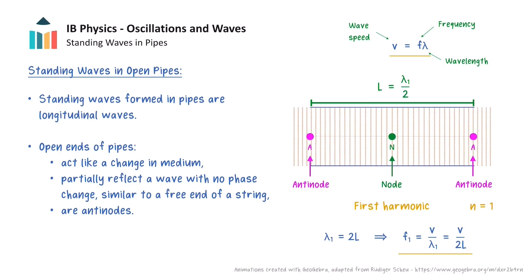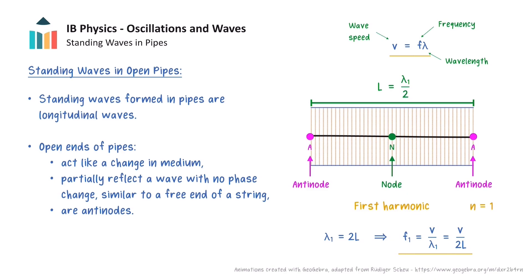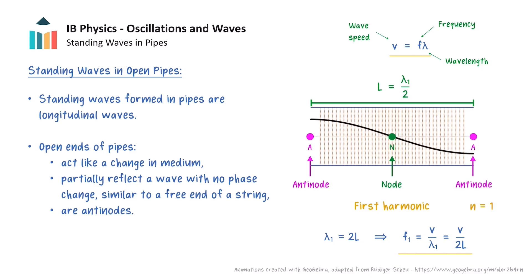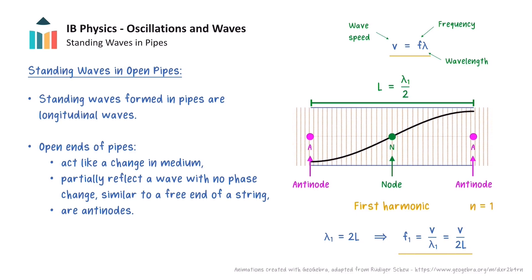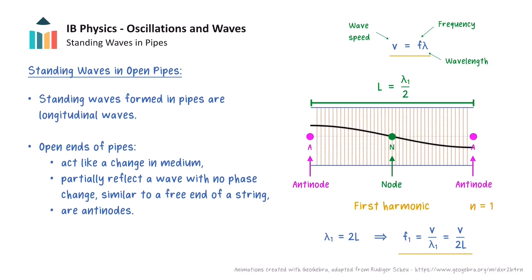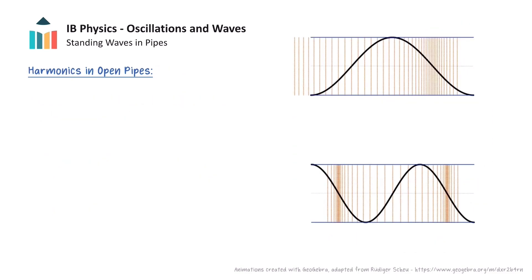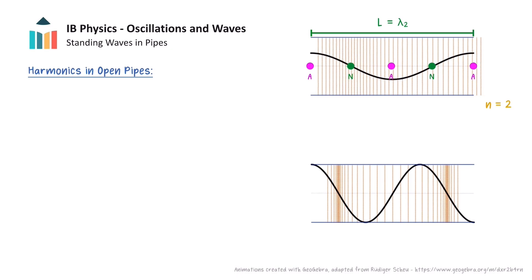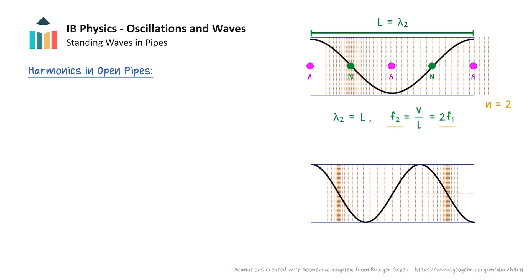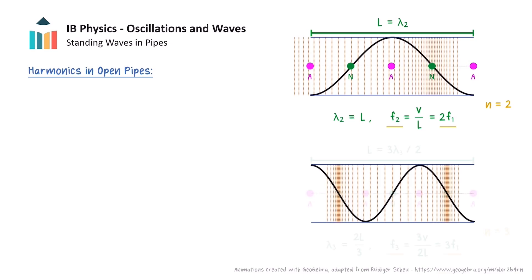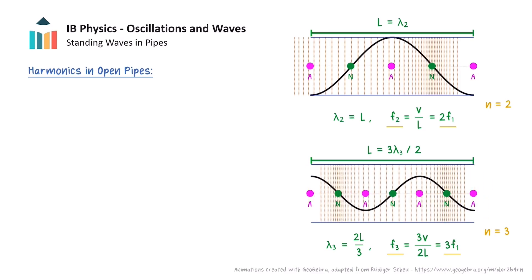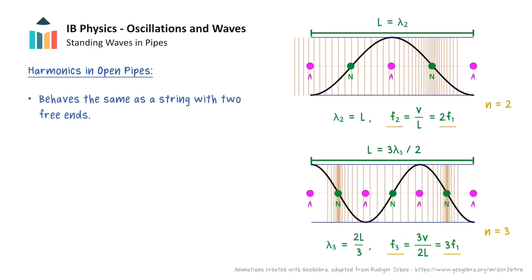The standing wave is a longitudinal wave as shown by the orange dot. A useful way to represent the longitudinal wave in this animation is through the use of a transverse wave shown in black, which shows the horizontal displacement of the air particles from their equilibrium positions. The second harmonic has two nodes and three antinodes, where exactly one wavelength fits in the pipe, and it has a frequency that is double the frequency of the first harmonic. Similarly, the third harmonic has a frequency that is three times that of the first harmonic. In particular, a pipe that is open at both ends behaves the same as a string with two free ends, as discussed in the previous video.